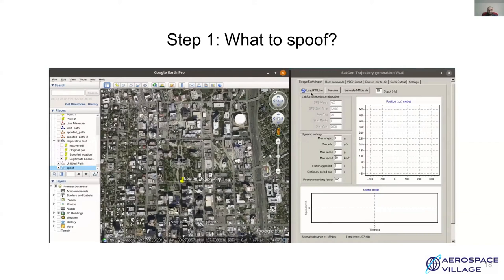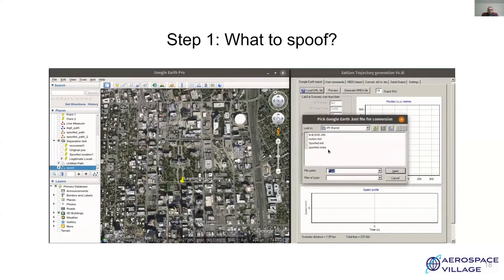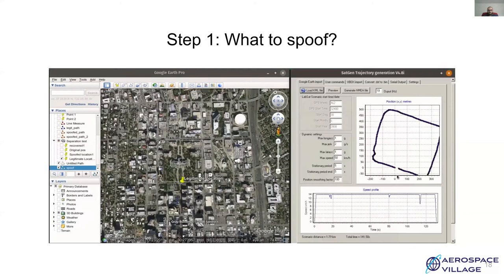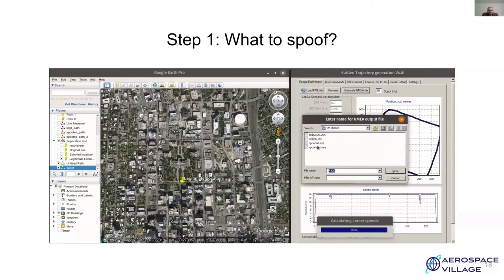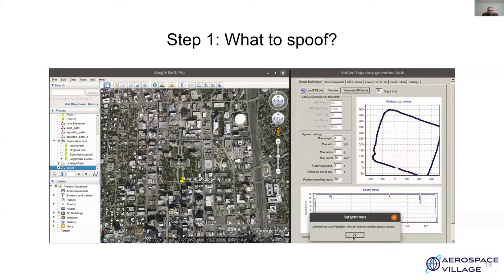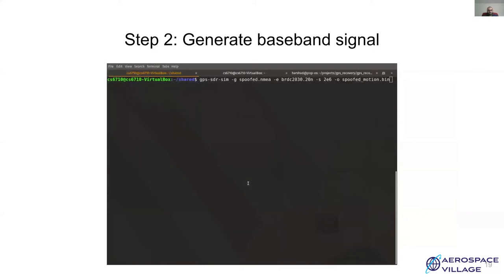Now, in the second part, we have to generate NMEA data. For this, load this path. As you can see, it shows the displacement in terms of latitude and longitude in meters. Now, you can keep these dynamic setting parameters as default. Just make sure that you have a suitable stationary period. And once you are done, just click on generate NMEA and you can store your data as .nmea file. All right, that's it. Now over to step two.